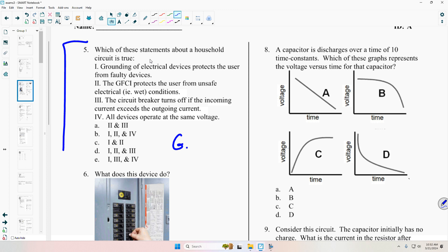Just to remind you, the GFI or GFCI turns off if I_out is less than I_in. And the circuit breaker turns off if I exceeds some maximum value, 15, 20 amps, or whatever. So those look really similar. Make sure you understand those.